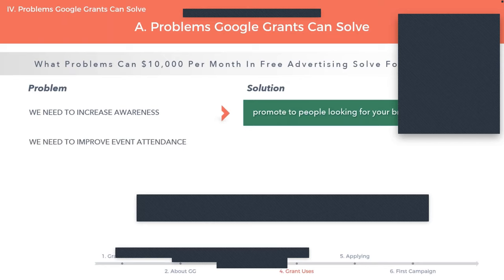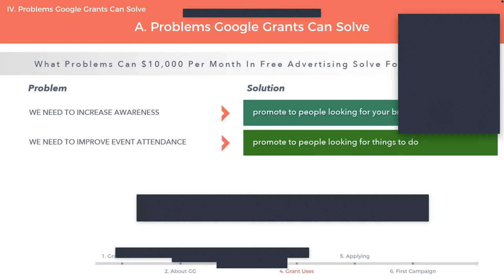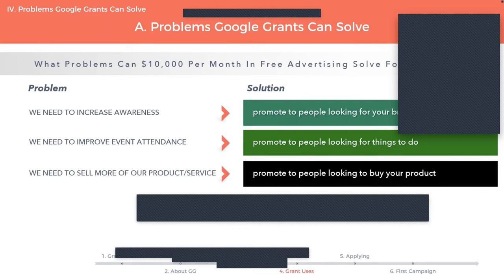If your problem is improving event attendance, you can use the Google Ad to create ads that promote your events to people who are looking for things to do. For example, if you have an event happening in Toronto, you can create a Google ad that directs people to the page that talks about it. If your nonprofit has a product or service that you sell, similarly you can use the grants program to promote this to people who are looking to buy something similar online — for example, if you sell t-shirts or jewelry that go to your nonprofit's cause.